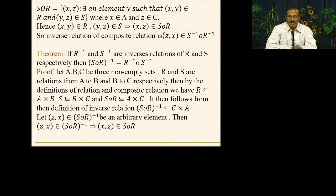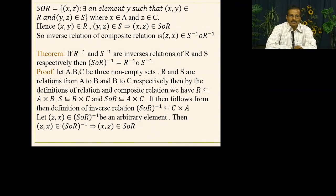The composition S∘R is written in terms of ordered pairs (x, z), where we introduce element y in B. This means (x, y) ∈ R and (y, z) ∈ S. Here x ∈ A and z ∈ C. Symbolically: (x, y) ∈ R and (y, z) ∈ S implies (x, z) ∈ S∘R. Just as R has an inverse, composite relations also have an inverse, and we can find (S∘R)-inverse.